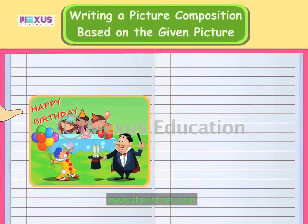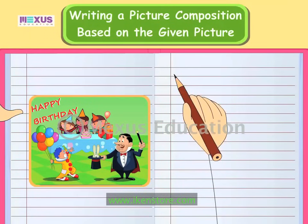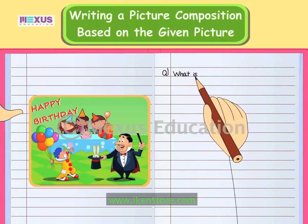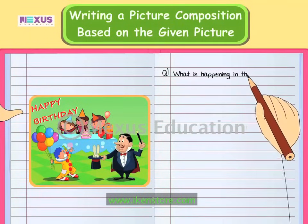Now, let us begin writing sentences on the first picture in Zizi's book. We can see there are many elements in this picture. To understand the picture in detail, let us first prepare a question-answer list. What is happening in the picture?